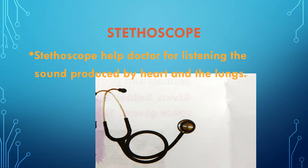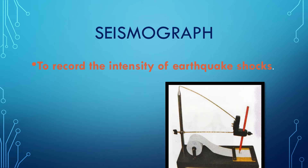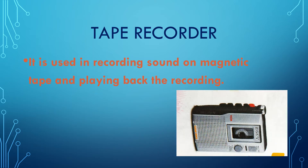After stethoscope, the next instrument is the seismograph. The seismograph is used to record the intensity of earthquakes. When earthquakes come, how much is the shock, the speed, and the intensity of the earthquake — all of this is measured with the help of the seismograph.